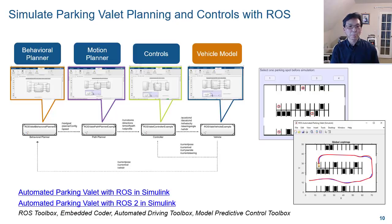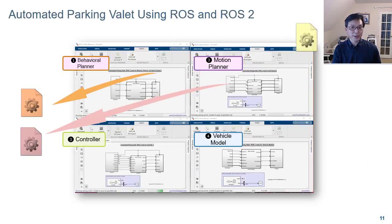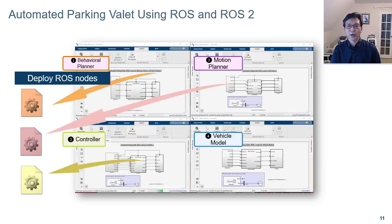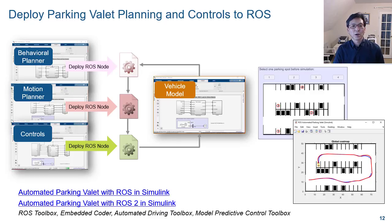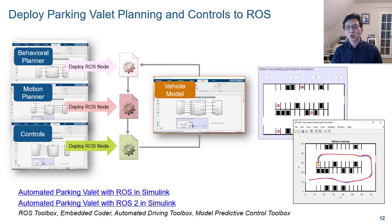Information exchange between models is based on ROS messages. We can then deploy each model as a standalone ROS node running on an actual vehicle, replacing simulation dynamics with actual vehicle dynamics. By deploying as a standalone ROS node, you can speed up the simulation and deploy to the target.